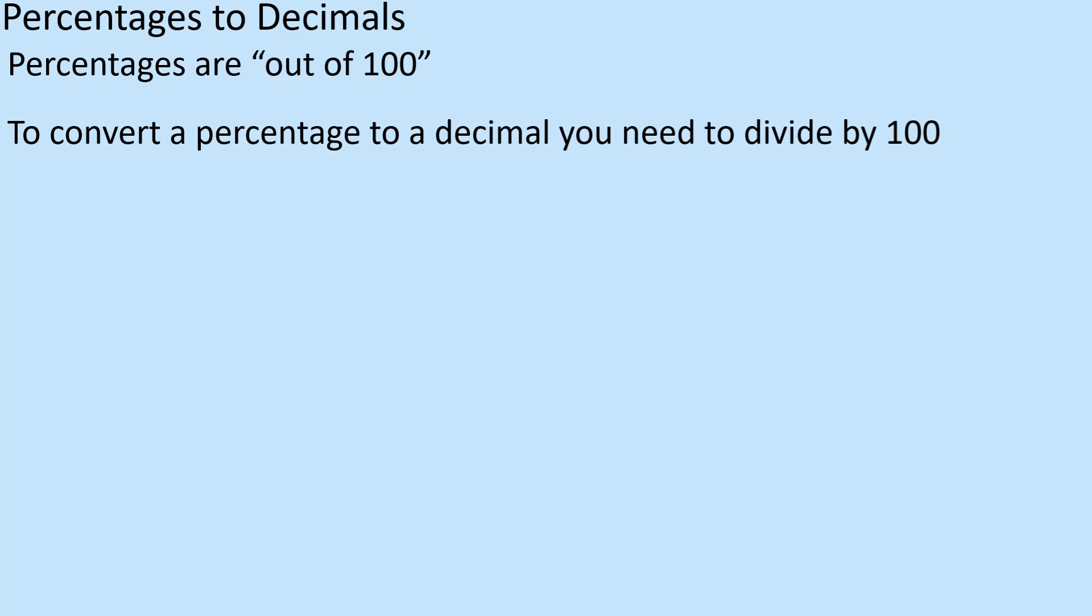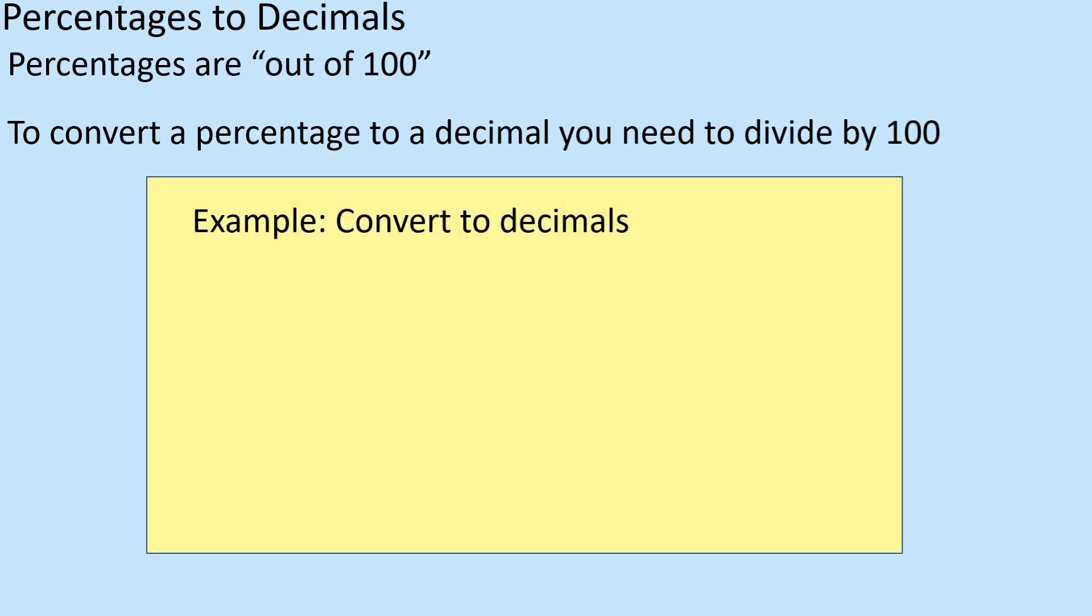If we're going from a percentage to a decimal, you just need to divide by 100. So let's not overcomplicate it. If you've got 46%, then you divide it by 100, it'll give you 0.46 and that would be the decimal.